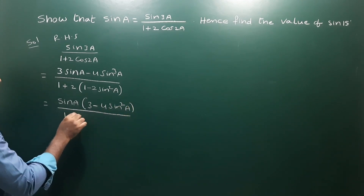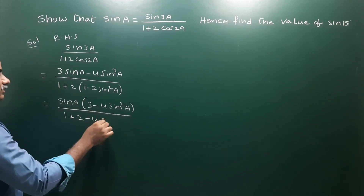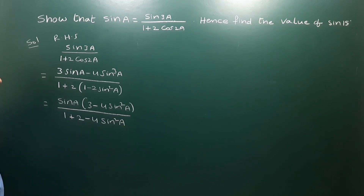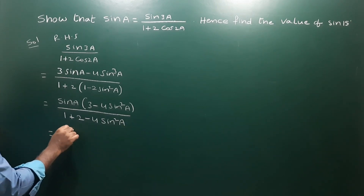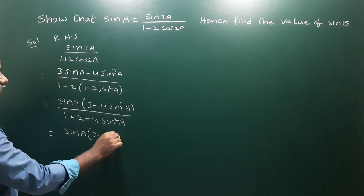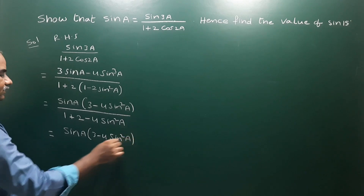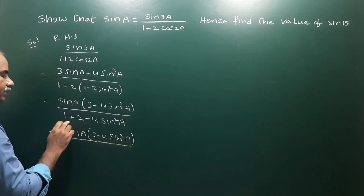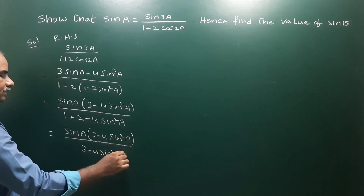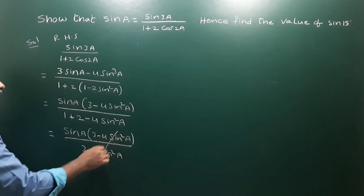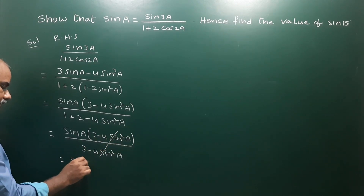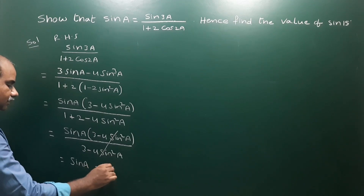In the denominator, 1 plus 2 cos 2a becomes 1 plus 2 times (1 minus 2 sin square a), which gives 3 minus 4 sin square a. These two factors are the same, so they cancel each other, and the remaining term is sin a, which is our LHS.